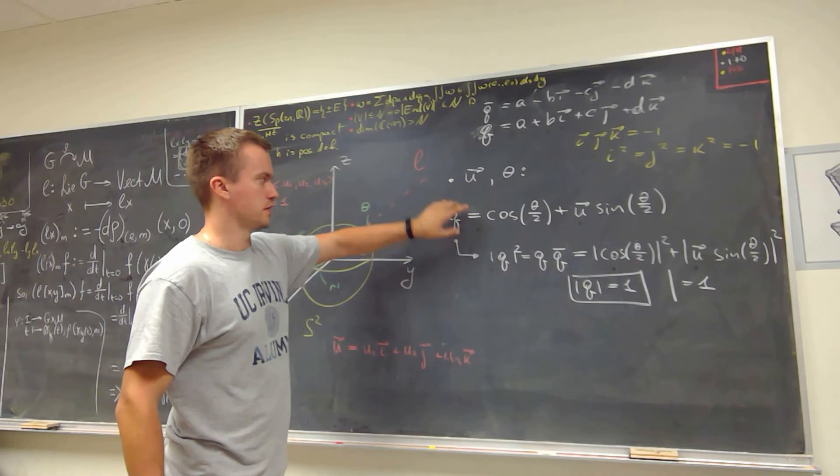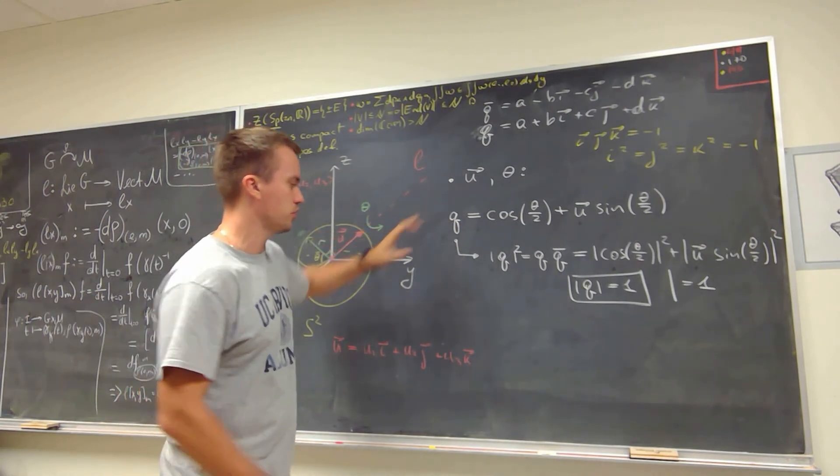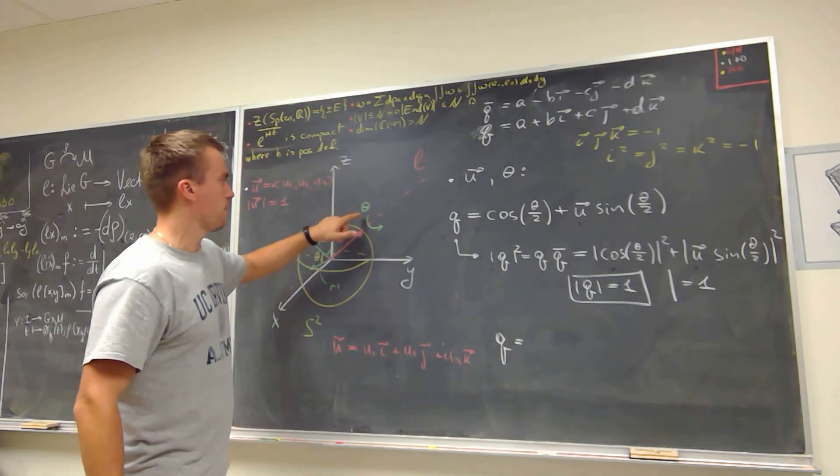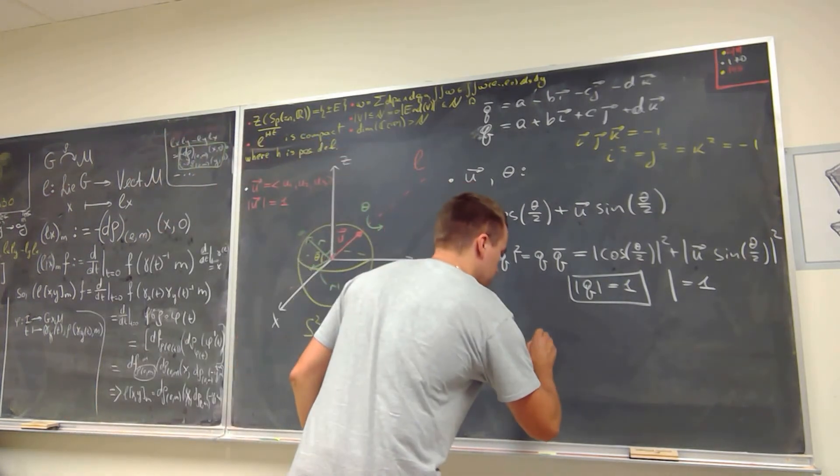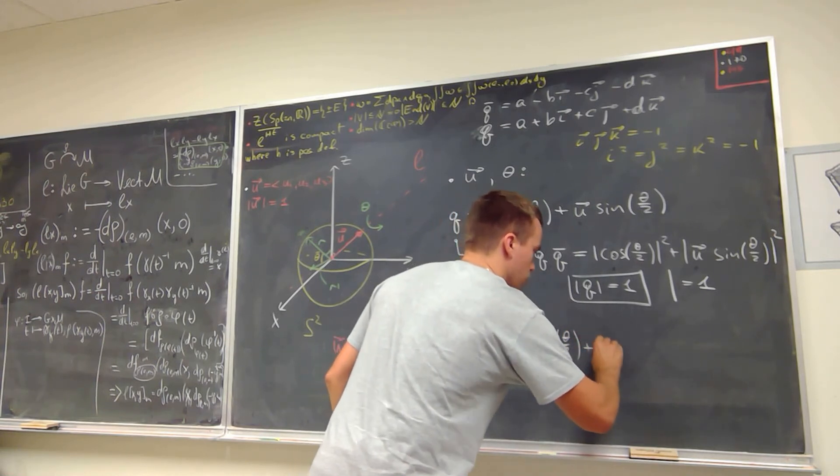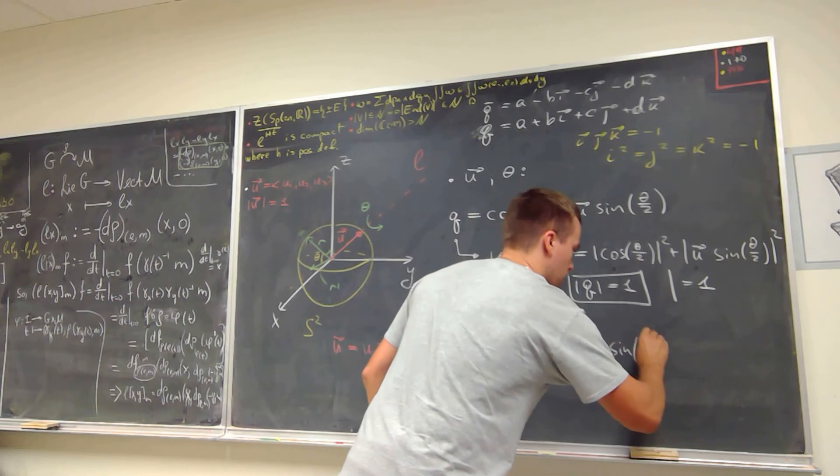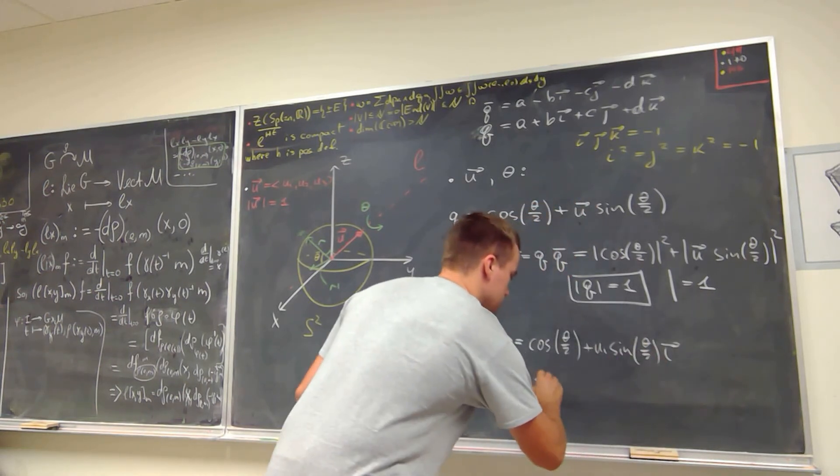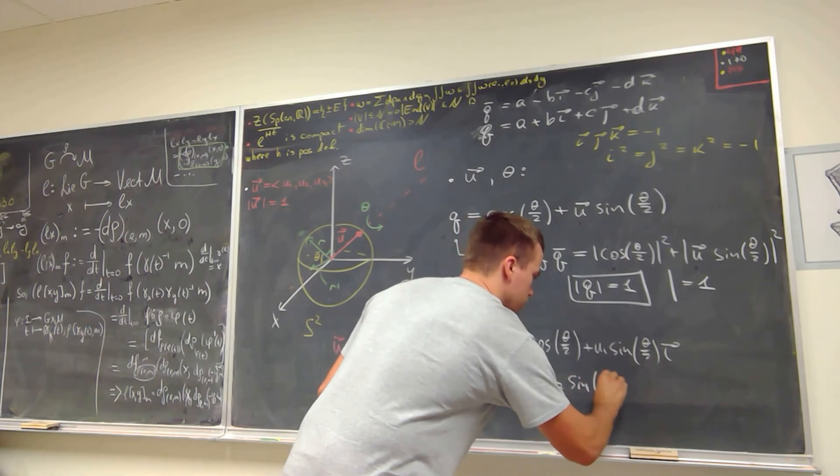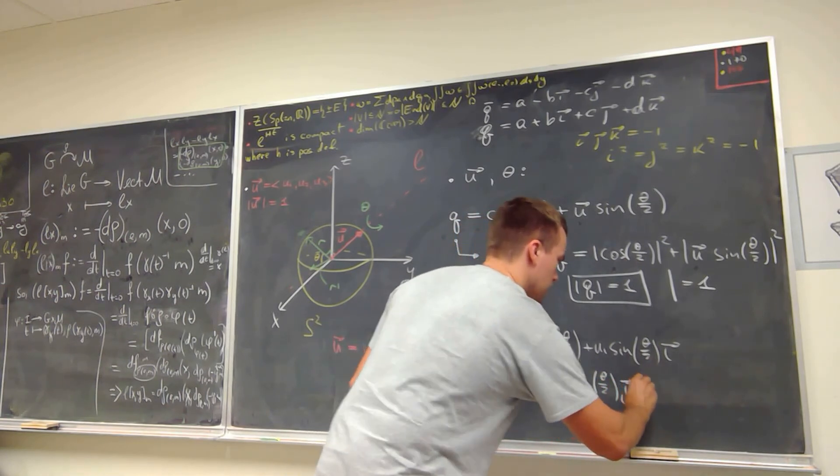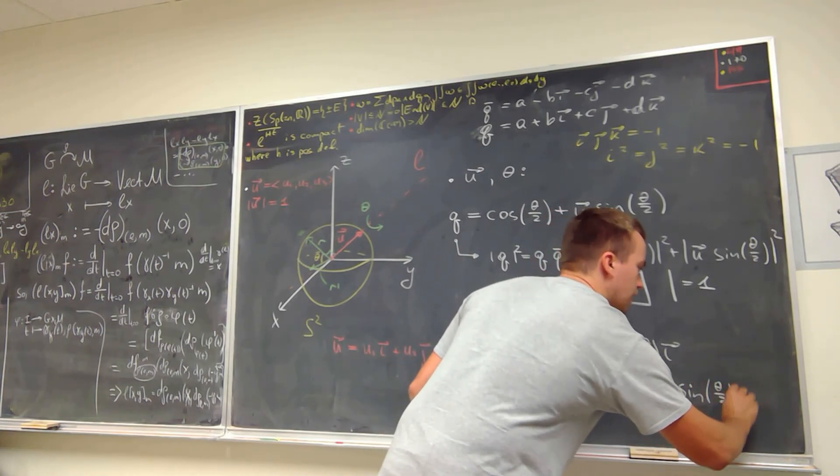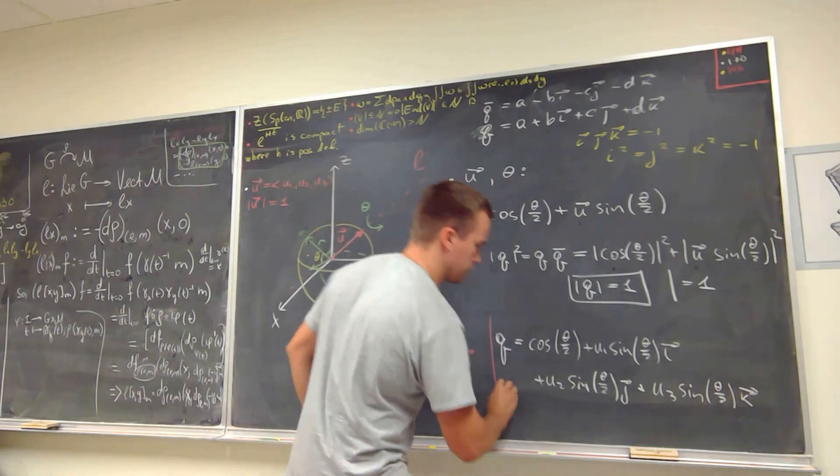And so finally, this is going to be a unit quaternion, and the rotation by theta around line l is going to be given as a quaternion with coordinates cosine of theta over two plus u1 sine of theta over two i plus u2 sine of theta over two j plus u3 sine of theta over two k. And this is going to be the formula.